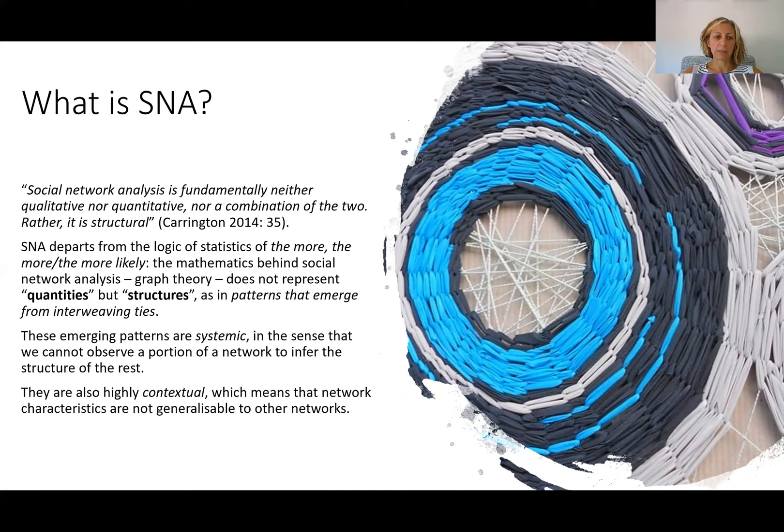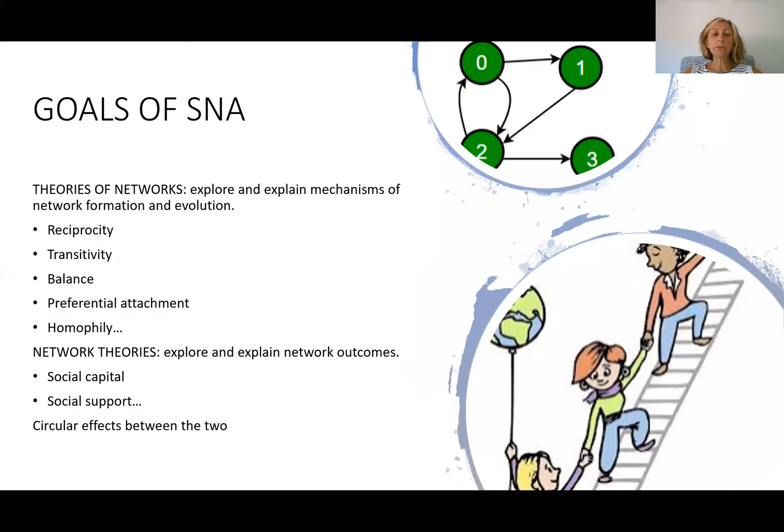This perspective doesn't represent quantitative data but structures — as in patterns that emerge from interweaving ties. These patterns are systemic in the sense that we cannot observe a portion of the network to infer the structure of the rest, and they're also highly contextual, which means that network characteristics are not generalizable to other networks.